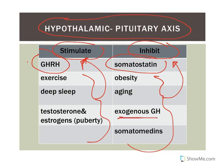Exogenous growth hormone — where you receive it from a doctor or take it when you shouldn't — is another inhibitor of natural production. If you take any hormone exogenously, it will inhibit your own natural production. If you're a normal healthy individual taking it, you'll shut down your own growth hormone production. If you then stop taking it, it's unclear how long before you start producing it again yourself. This applies to many different hormones — because of feedback inhibition, taking it exogenously means your body doesn't need to produce it.